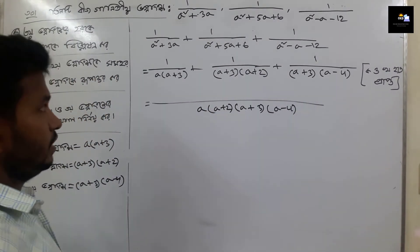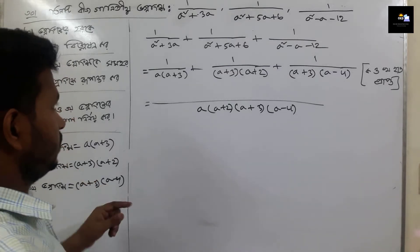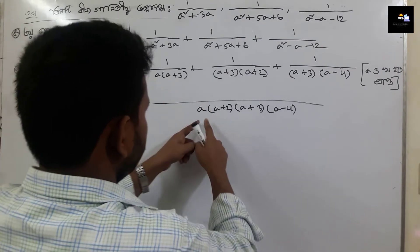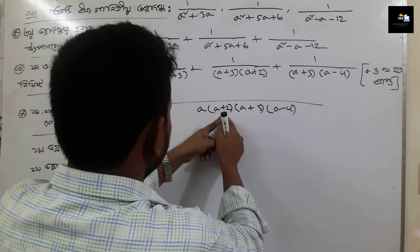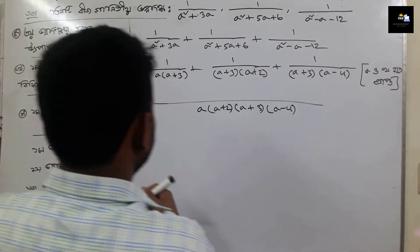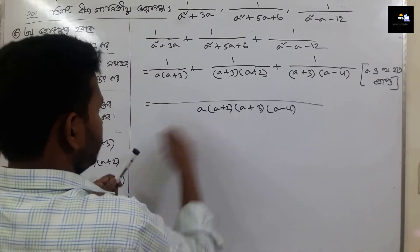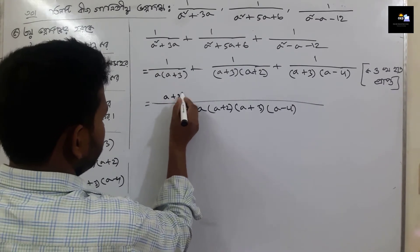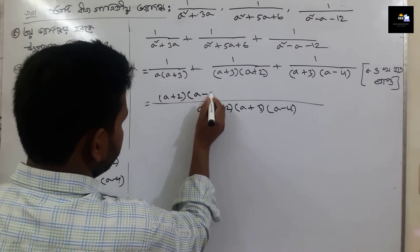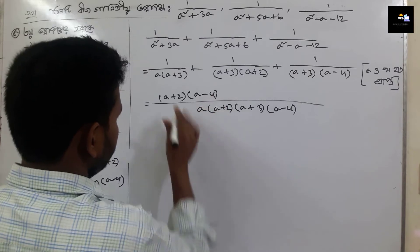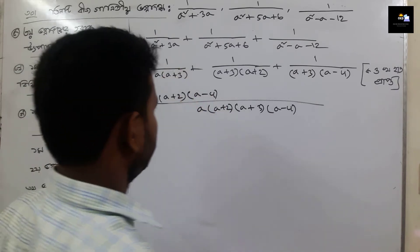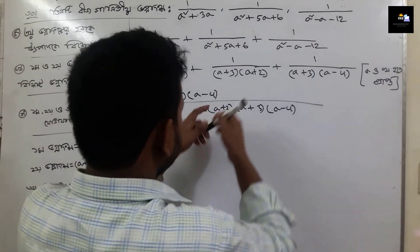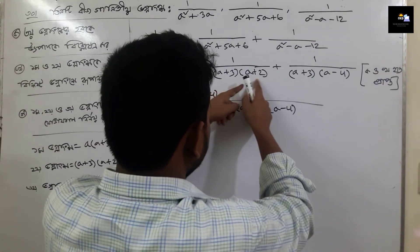Now we have the same thing as we have done. So we can see a plus 3. We will see a plus 2 into a minus 4. So we will see a plus 3 into a minus 4. Now we will see a plus 3 among a plus 2.